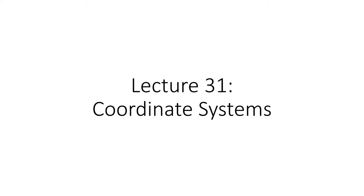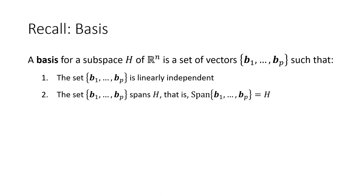In this lecture, we're going to talk about coordinate systems. In the previous lecture, we talked about the idea of a basis. When we have a subspace of Rn — a subset of Rn that contains the zero vector, is closed under vector addition, and closed under scalar multiplication — and if that set of vectors is linearly independent and spans the subspace, we say those vectors form a basis. It's a complicated definition, but we went through some examples, so if you need a review, go ahead and watch that lecture again.